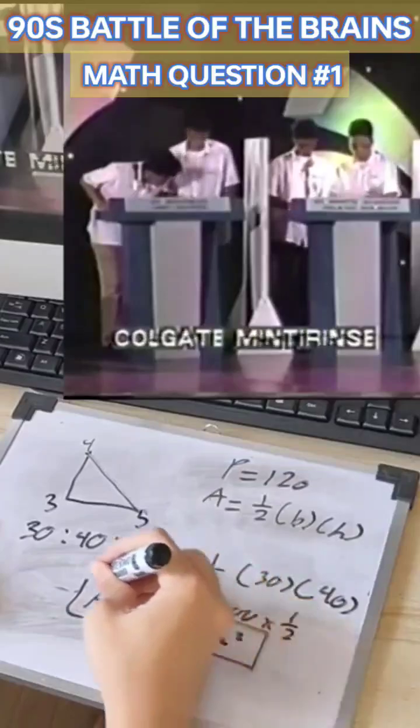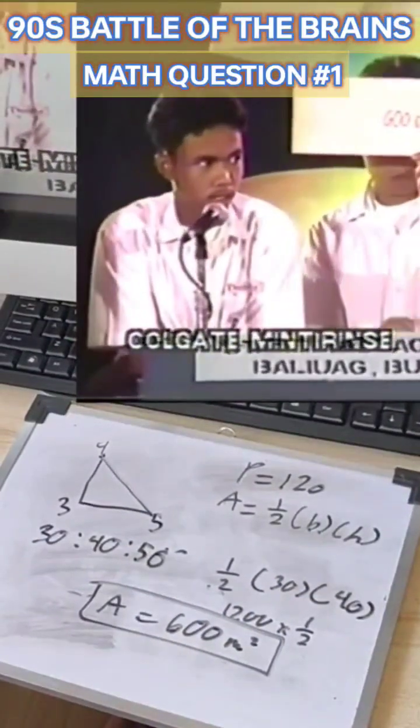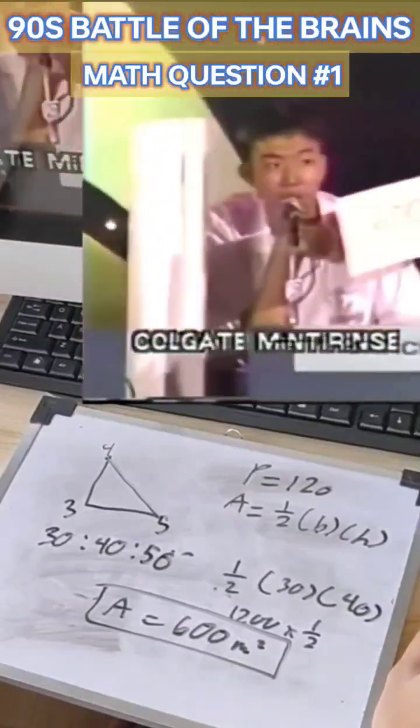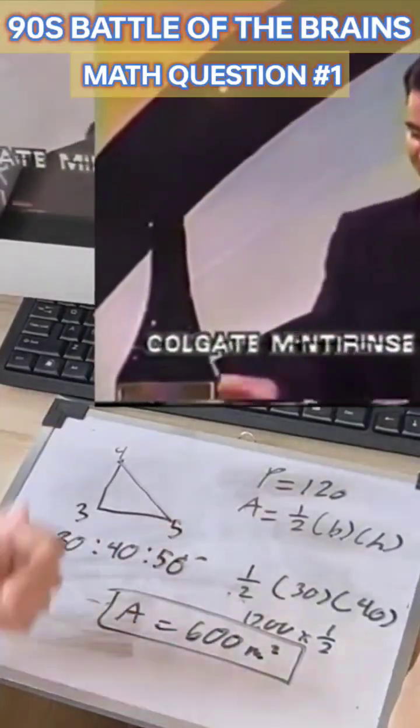Let's have your answers, please. St. Stephen's—blank, no answer again. St. Mary's—600 square meters. And Grace Christian—600 square meters. All right, the answer is 600 square meters. Very good.